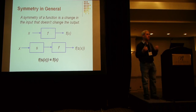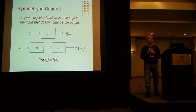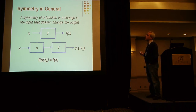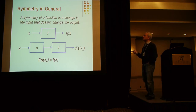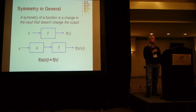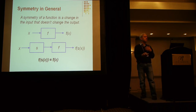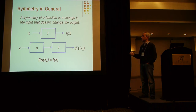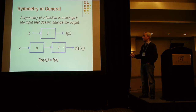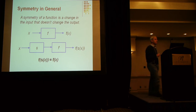Here's the more general notion of symmetry that we're really interested in: the notion that a symmetry of a function is a change in the input that doesn't change the output. So here's an object X, here's a function F of X, and what I'm saying is that a symmetry of F is another function S that I apply before F, such that if I apply S and then F, I get the same result as if I just apply F.